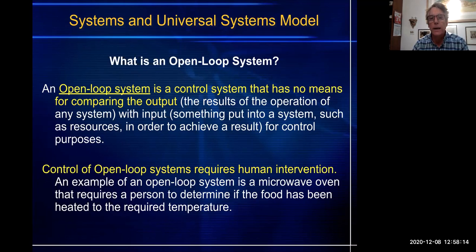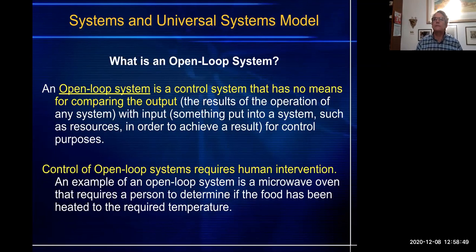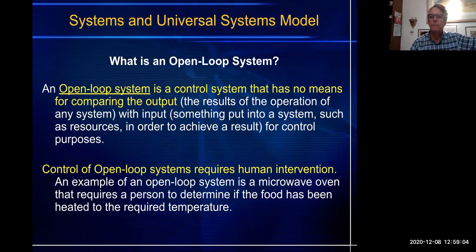This is a great way of determining if something is an open-loop system: does a human have to do something to regulate the system? If they do, that is probably an open-loop system. An open-loop system is a control system that has no means of comparing the output — the result of the operation of any system — with the input, in order to achieve a result for control purposes. My example: I have a house, I'm a human, and I need water. I also have a cute little dog that needs water. The Montgomery County water system puts a pipe into my house with water. That is my input.